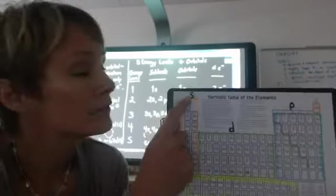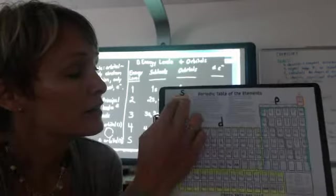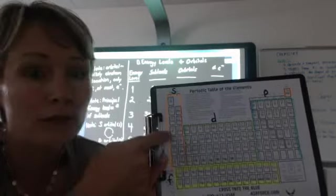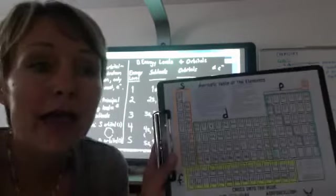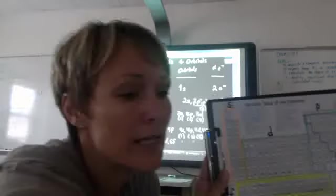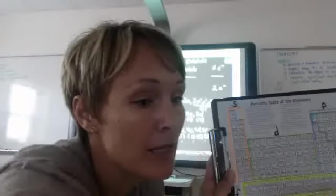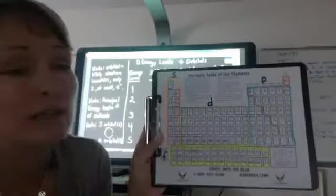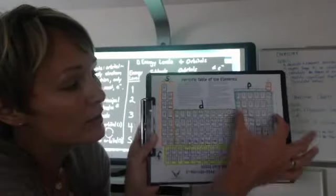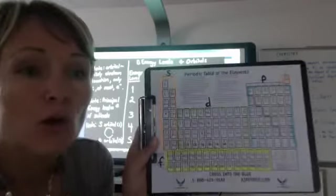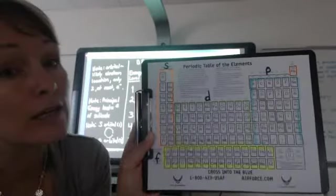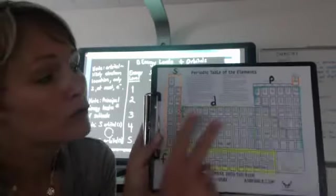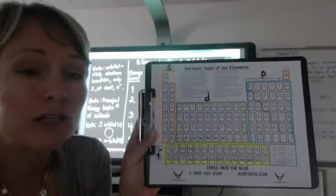The s orbital can hold two electrons. This includes the first two groups on the periodic table. Remember, every energy level has one s orbital. So, the p sublevel corresponds with this location on the periodic table. Remember, there are three p orbitals. And if each orbital holds two electrons, that would be a total of six.